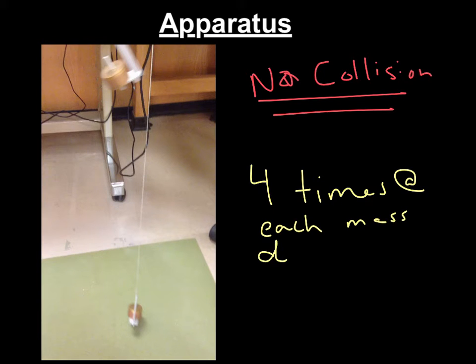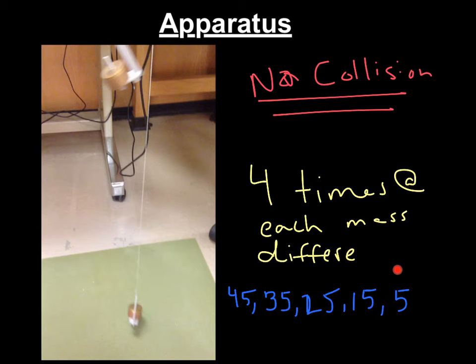So 45, 35, 25, 15, and 5, corresponding to moving 5 grams from the more massive hanger to the less massive hanger.